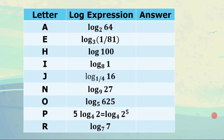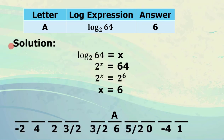For letter A, log of 64 to the base 2. Let's try mental math: 2 raised to x equals 64, and 2 raised to 6 is 64. So letter A corresponds to the answer 6. In the full solution: log of 64 to the base 2 equals x, then 2 raised to x equals 64, and we know 2 raised to 6 equals 64. They have the same base, so x equals 6. We find 6 in the answer bank and write letter A.